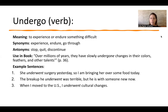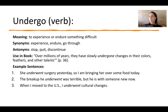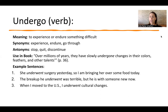Undergo is a verb meaning to experience or endure something difficult — to go through something hard. The opposite is to stop going through it. The irregular forms are: undergo (base), underwent (past), undergone (past participle). Examples: 'She underwent surgery yesterday, so I'm bringing her food today.' 'The breakup he underwent was terrible but he is with someone new now.' 'When I moved to the US I underwent cultural changes.' You can also say 'I will undergo difficult times when separated from my family.'